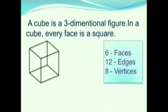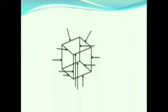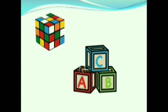Now we will learn about the cube. A cube is a three-dimensional figure where every face is a square. It has six faces, twelve edges, and eight vertices. The arrow marks in the picture show all the vertices and edges of the cube. Examples include a Rubik's cube and building blocks, which both look like a cube.